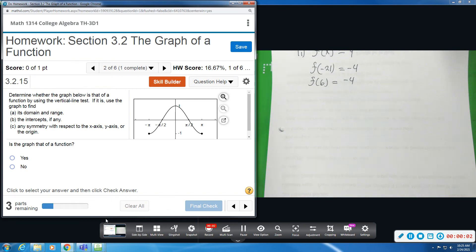Alright, number two. We want to know several questions, so there's three parts remaining, four all together. I want to know, is this graph a function? We're going to find the domain and range, any intercepts, and any symmetry with respect to x-axis, y-axis, or the origin.